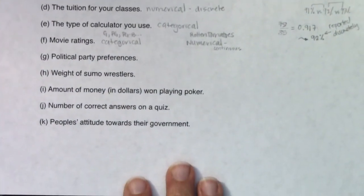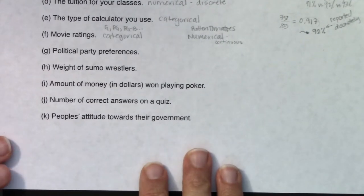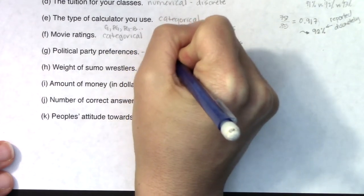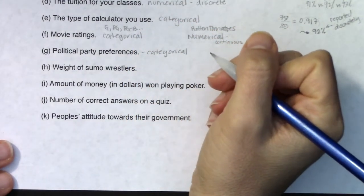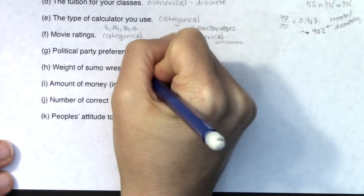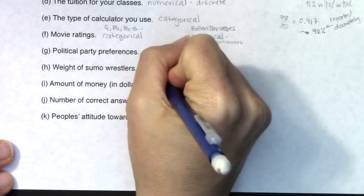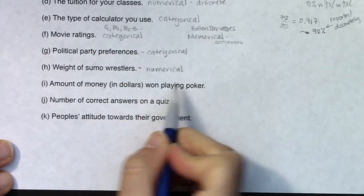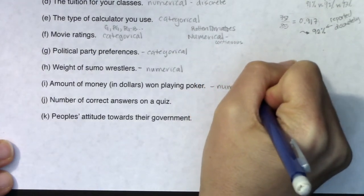I'm going to move this up and we're going to start to take a look. Political party preference would be categorical. You would tell me something like I am a republican, a democrat, an independent, part of the green party. For weight of sumo wrestlers, that is a numerical variable. Weight is numerical. The amount of money I won playing poker would be a number, so that is a numerical variable. The number of correct answers on a quiz, that is a numerical variable.